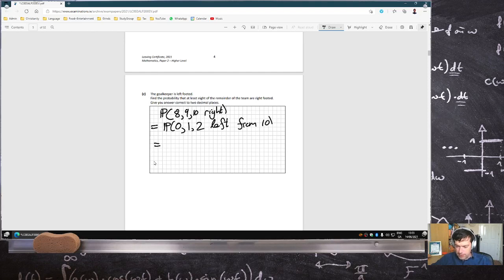All right, so it's going to be 10C0, 0.15^0, 0.85^10, and then just do the other two, 10C1 and 10C2. That's all. A bit of a pain, really.